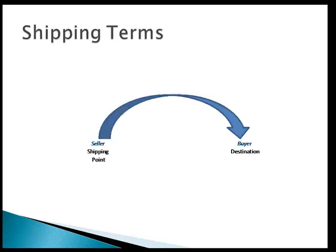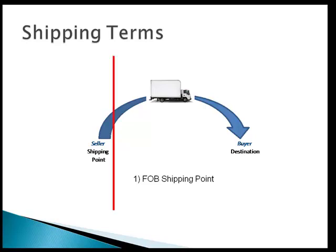Shipping terms — I just draw a little diagram, from the seller to the buyer with an arrow. From the shipping point is where inventory leaves the dock and goes to the buyer or the destination. I even draw a little truck for a visual. There are two types of shipping terms: FOB shipping point or FOB destination. If it's FOB shipping point, draw a line at the shipping point — the buyer owns the inventory and pays shipping costs the minute it leaves the dock. It goes onto their balance sheet, they pay shipping costs, and they're responsible if the truck gets in an accident.